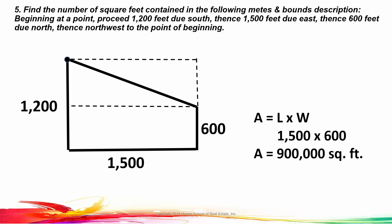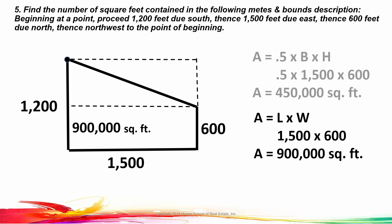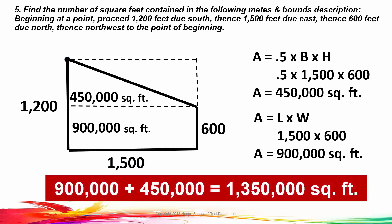Let's find the area of the rectangle first. The area of a rectangle is length times width, so it's 1,500 feet times 600 feet, which is 900,000 square feet. Since the triangle on top is half of that rectangle, we know it's 450,000 square feet. Let's do the math: the area of a triangle is one-half the base times the height, so that's one-half times 1,500 times 600, which equals 450,000 square feet. The property is a total of 1,350,000 square feet.